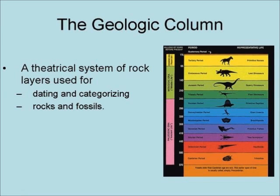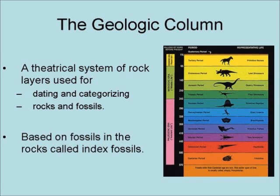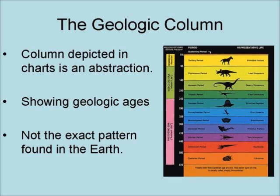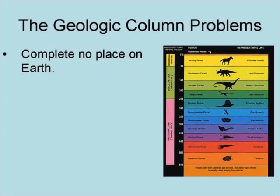The geologic column is a theoretical system of rock layers used for the dating and categorizing of rocks and fossils. It is based on fossils found in the rock called index fossils. The column depicted in charts is an abstraction showing geologic ages, but not the exact patterns found in the Earth. The theoretical geologic column is not found complete anyplace on Earth, because it was constructed by combining different locations.